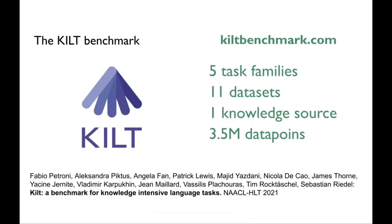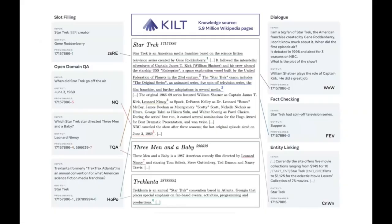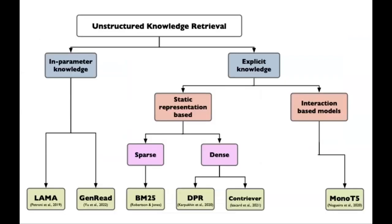We created a benchmark a few years ago called KILT — Knowledge-Intensive Language Tasks — where we open-sourced and collected a bunch of tasks that were already available, covering slot-filling, open-domain QA, dialogue, and so on. Slot-filling is the task of, given an entity and a relation, trying to retrieve the object. We mostly use this benchmark to evaluate our models.